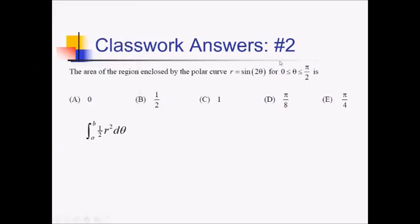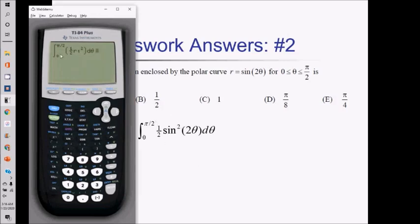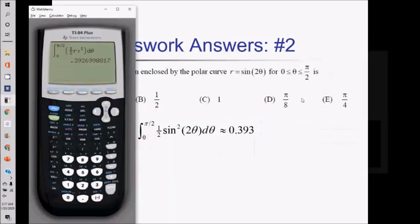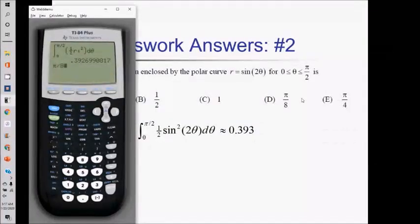So it looks like we need the integral from 0 to pi over 2. I'm going to have 1 half r squared — they gave us the r — so that's going to be 1 half times sine squared of 2 theta. Plugging that into the calculator: integral from 0 to pi over 2, 1 half, and since I stored sine of 2 theta as r1, I can just square that with d theta automatically. Pressing enter, we get about 0.393. Checking the answer choices, pi over 8 is the same, so that's choice D.